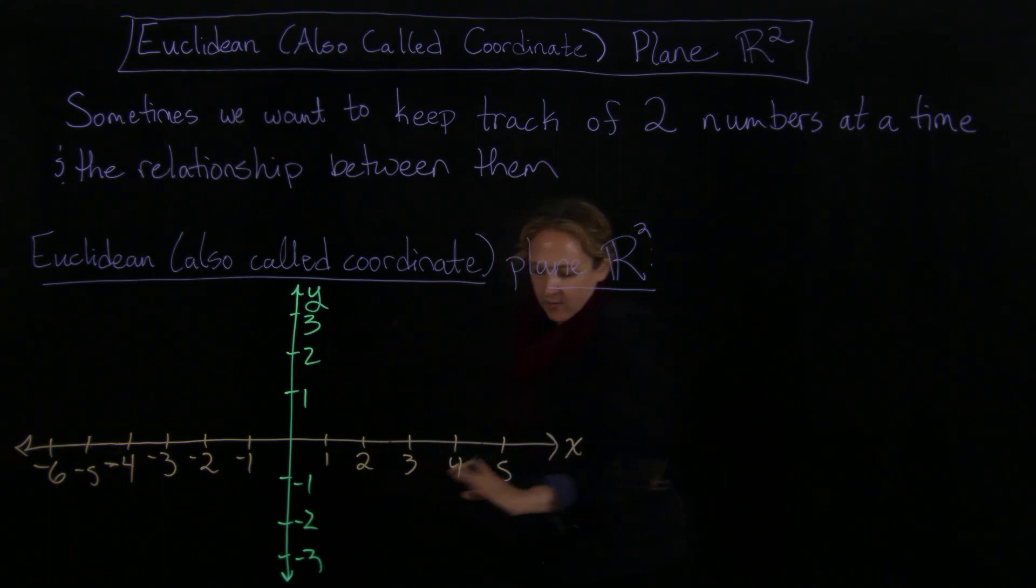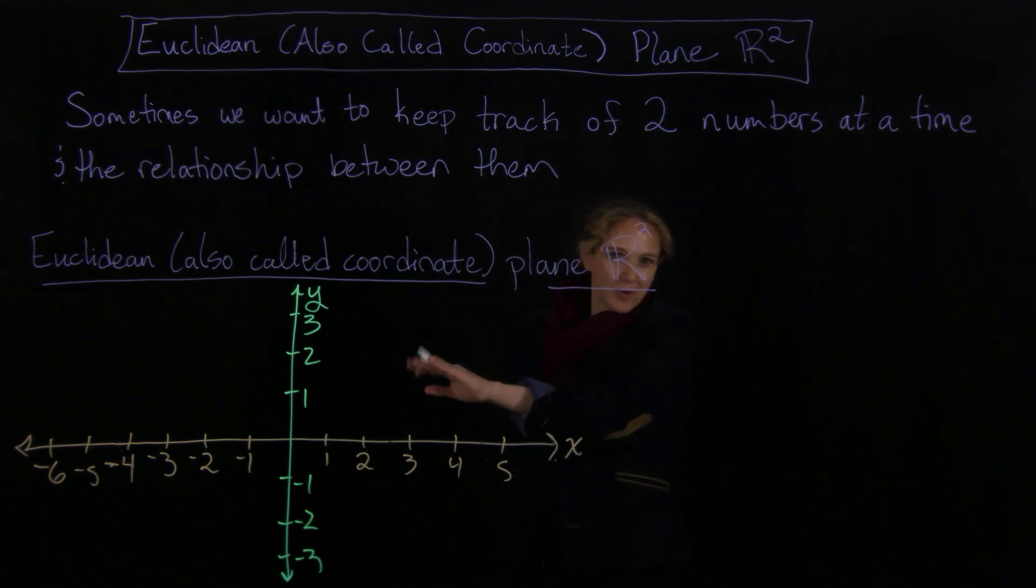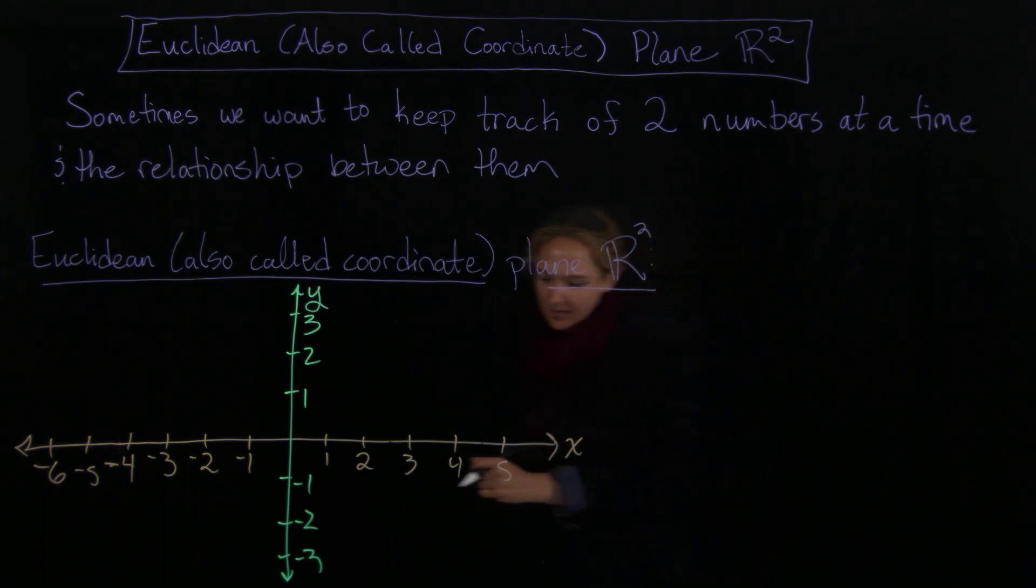But your point is going to consist of the data of both your left, right, that will be your first coordinate, and your up, down, which will be your second coordinate. So let's look at an example.